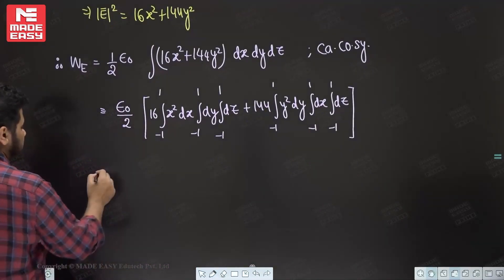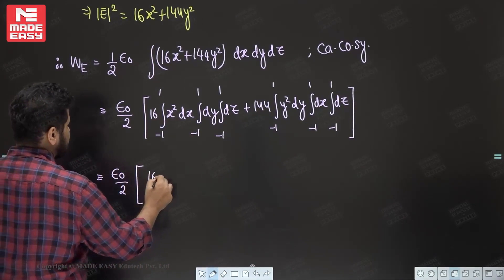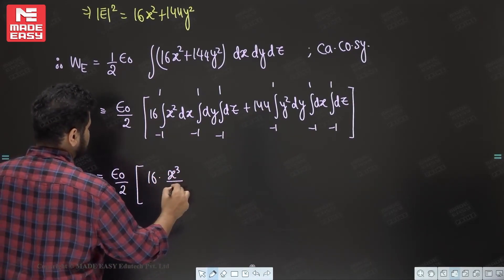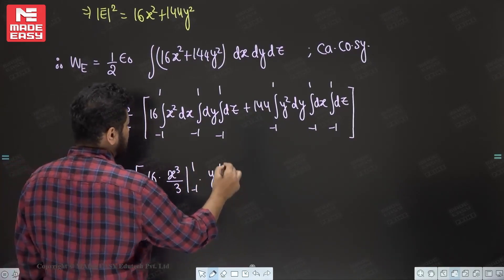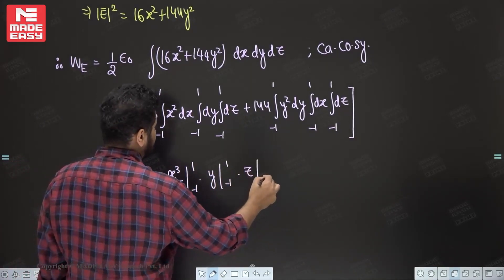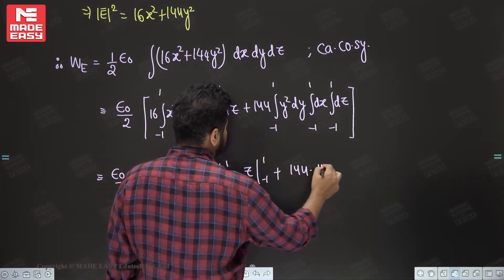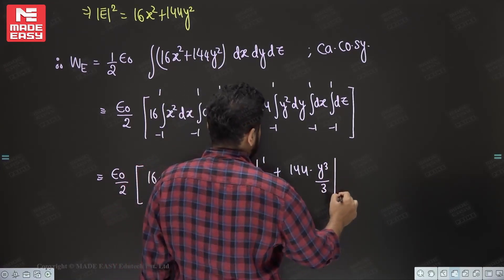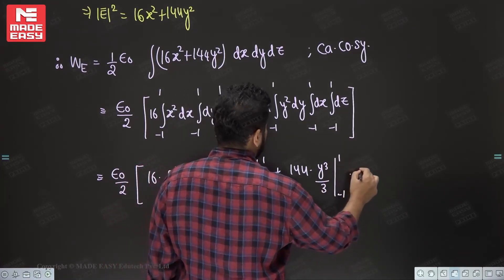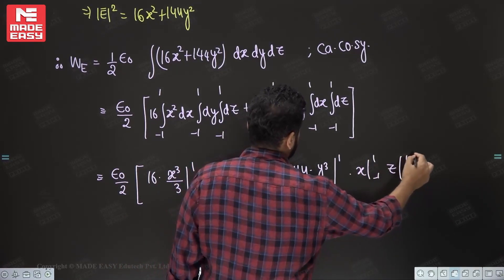Therefore, this is equal to epsilon naught upon 2. Now this is your 16 times x cube upon 3 from minus 1 to 1, y from minus 1 to 1, z from minus 1 to 1, plus 144 y cube upon 3 from minus 1 to 1, x minus 1 to 1, z minus 1 to 1.